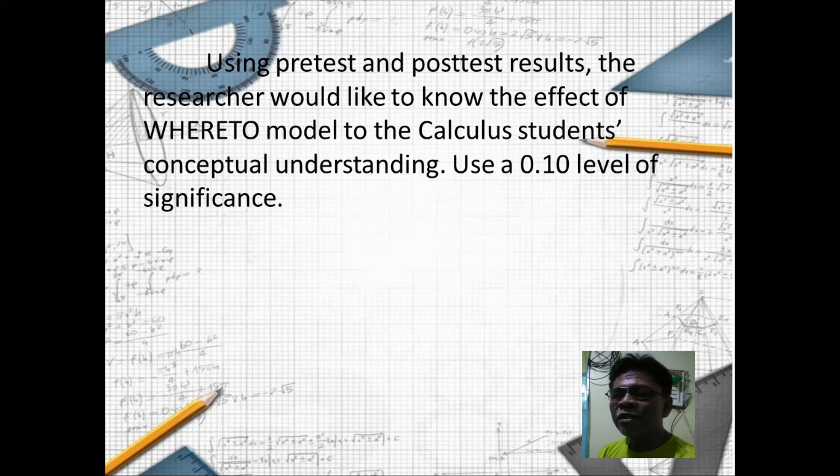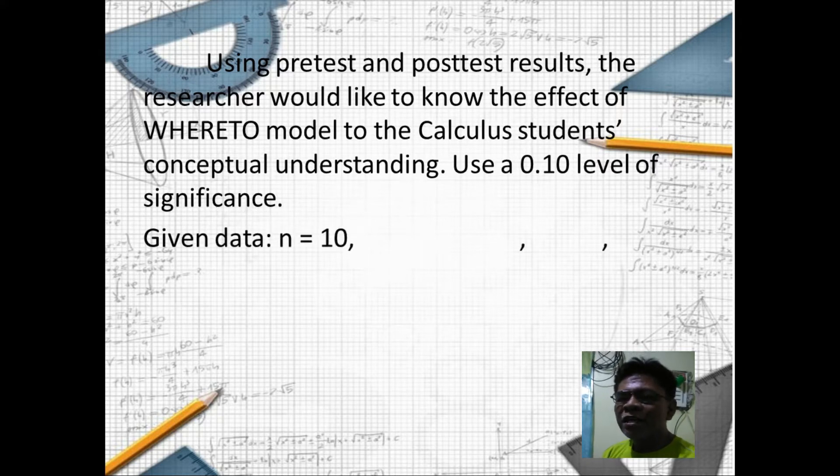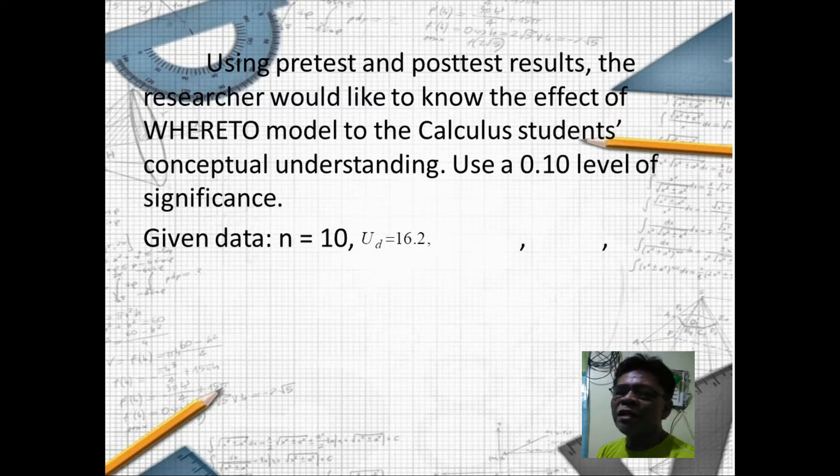Use a 0.10 or 10 percent level of significance. We have given data: n equals 10, meaning the researcher used 10 students as participants of the study. μ_d equals 16.2, d̄ equals 14.3, s_d equals 3.9, and alpha equals 0.10.